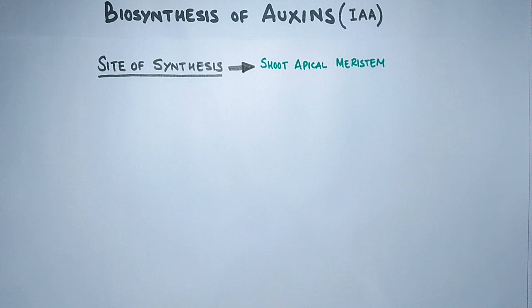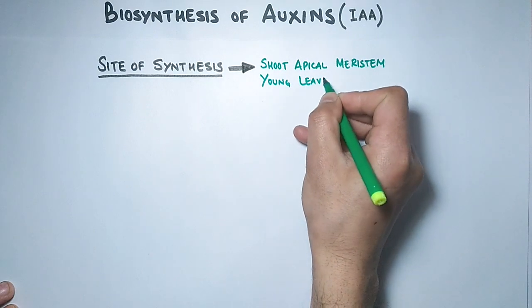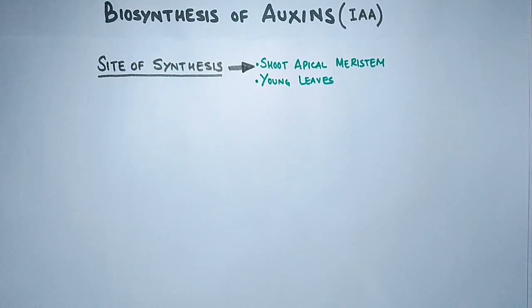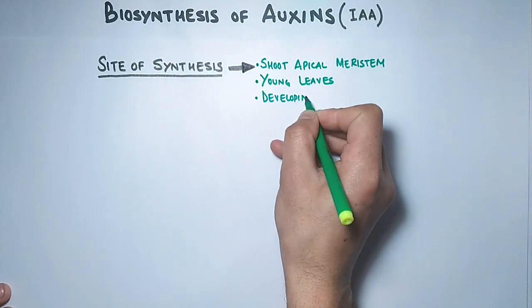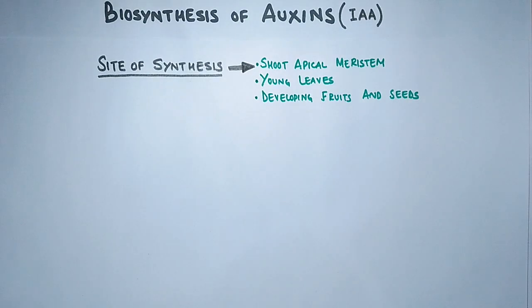The shoot apical meristem is also the site of embryogenesis in most flowering plants, so auxin is produced here to facilitate cell division at a greater rate. Other sites of auxin synthesis include young leaves as well as developing fruits and seeds.